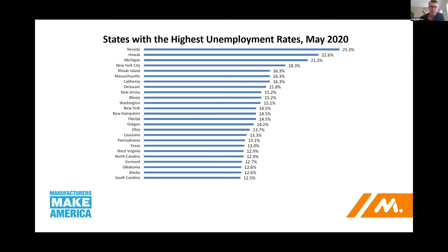This chart, which was in the Monday report, shows unemployment rates as of May. Every one of these states showed progress between April and May. Nevada had an unemployment rate of 30% in April, and that fell to 25% — but those are jaw-dropping numbers. 25% is Great Depression-level unemployment. Nevada's challenge is a little bit manufacturing, but mostly because it's heavily dependent on the service sector.